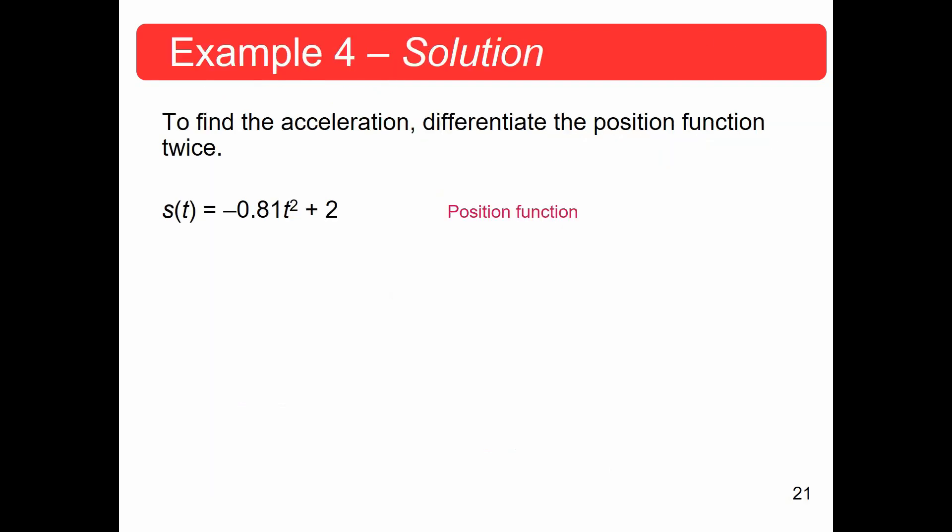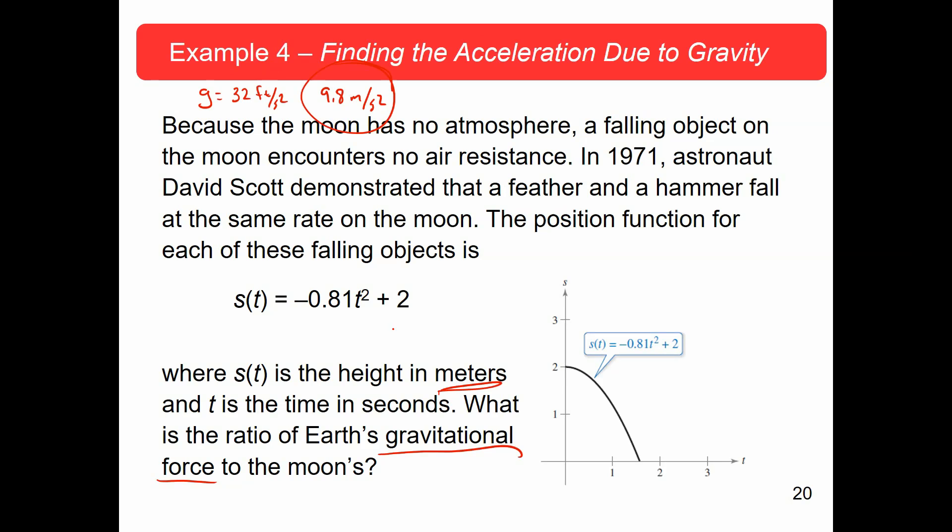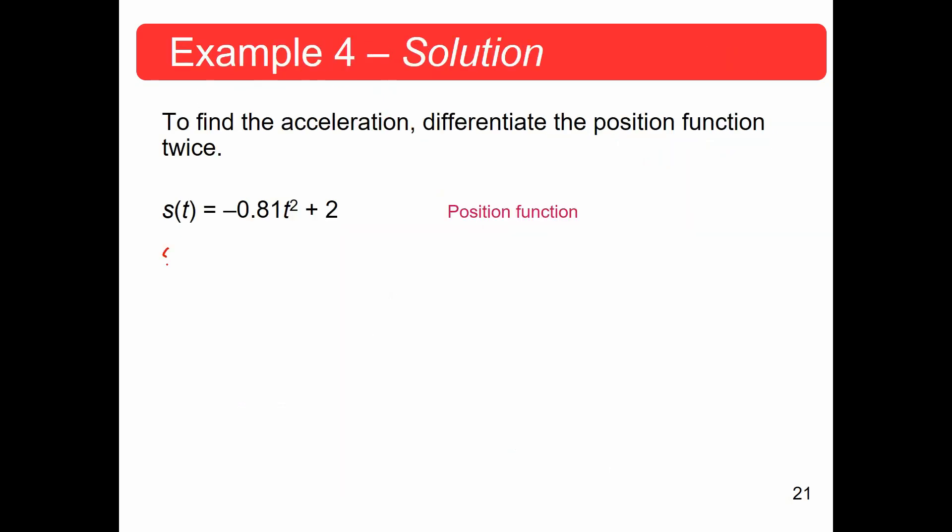So, let's find out what the acceleration is due to this position. So, we know that the acceleration is the second derivative. So, we're going to start with the first derivative, which is going to give us 2 times negative 0.81, which is negative 1.62t.